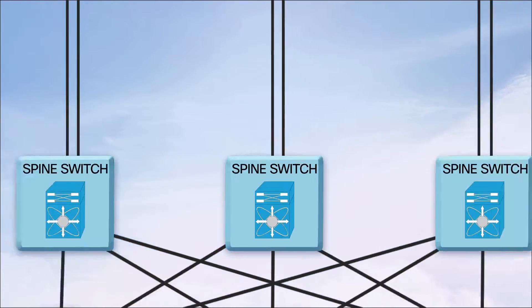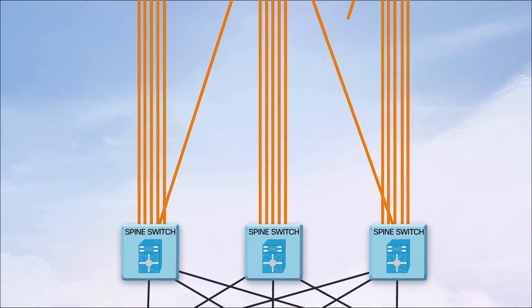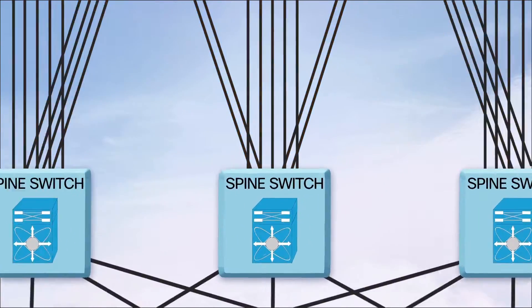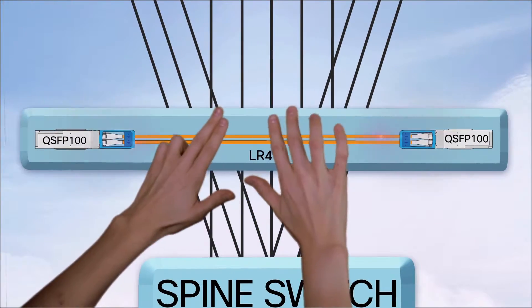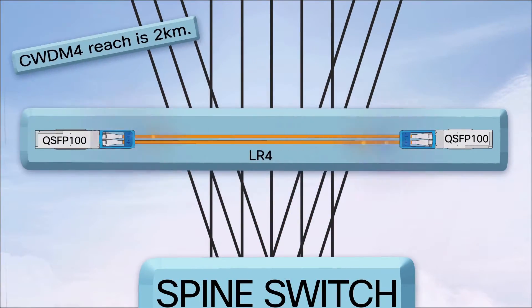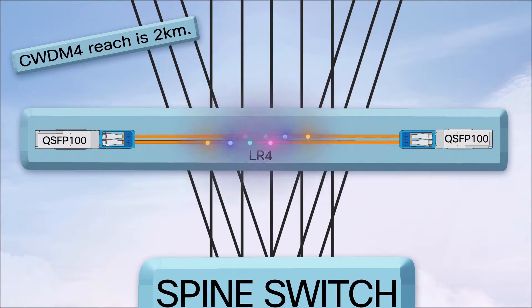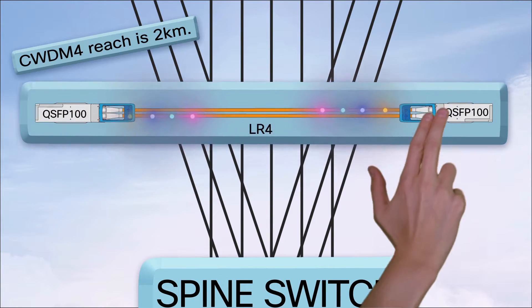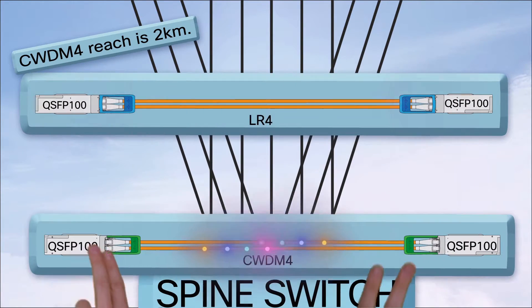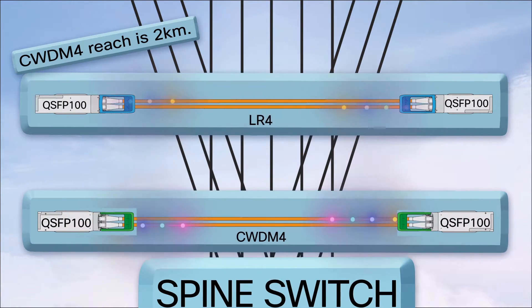For the spine uplinks to other data centers and data center layers, use LR4, assuming you need up to 10 kilometer reach on dual fiber SMF. CWDM4 works here too.